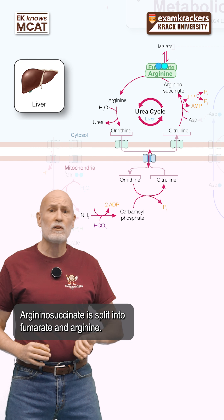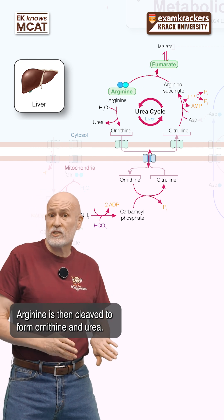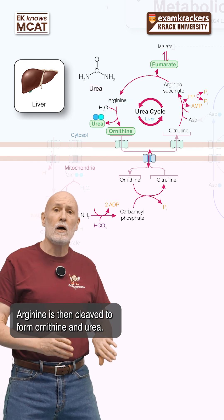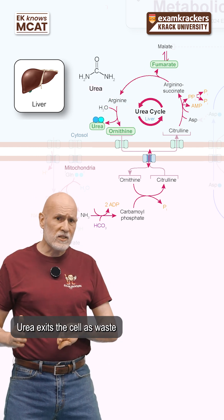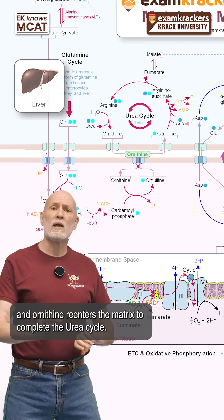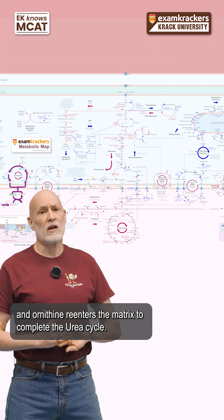Argininosuccinate is split into fumarate and arginine. Arginine is then cleaved to form ornithine and urea. Urea exits the cell as waste and ornithine re-enters the matrix to complete the urea cycle.